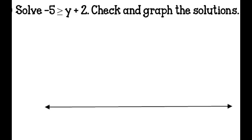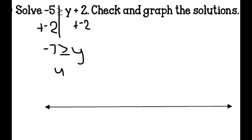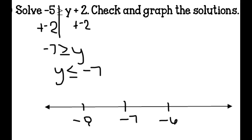Solve negative 5 is greater than or equal to y plus 2. Draw the line and add negative 2 to both sides — what you do to one side, you must do to the other. Negative 5 plus negative 2 is negative 7, so negative 7 is greater than or equal to y. Using the switch it, flip it, rearrange it rule, y is less than or equal to negative 7. When graphing the negative number line, be careful not to mix up negative 6 and negative 8. Use a closed circle and shade everything to the left of negative 7.